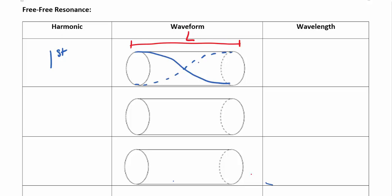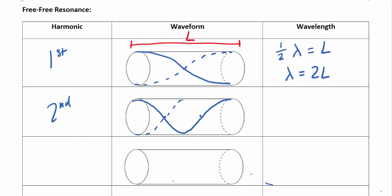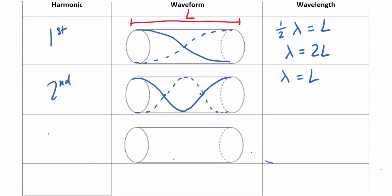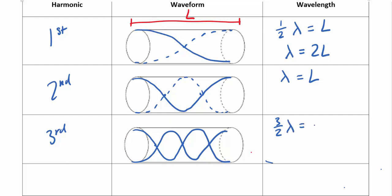Looking closely at the free-free first harmonic, you can see it fits exactly half a wave, so λ = 2L. Jumping to the second harmonic, a second node is added and the pattern fits exactly one full wavelength into L. For the third harmonic, another node is added, and three halves of a wavelength fit into L, giving λ = 2L/3.